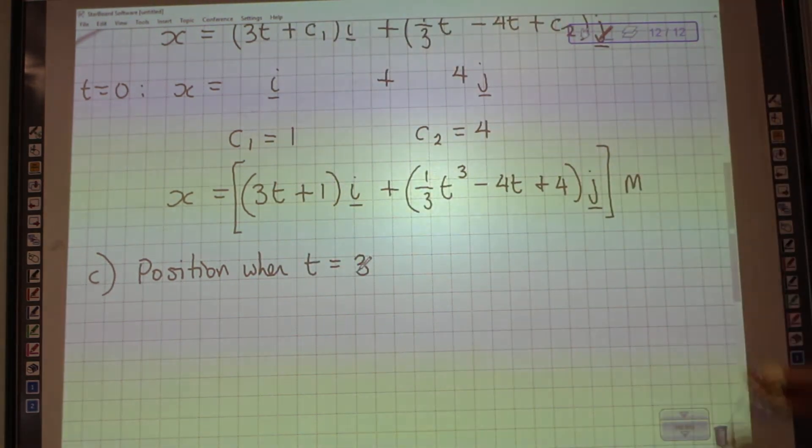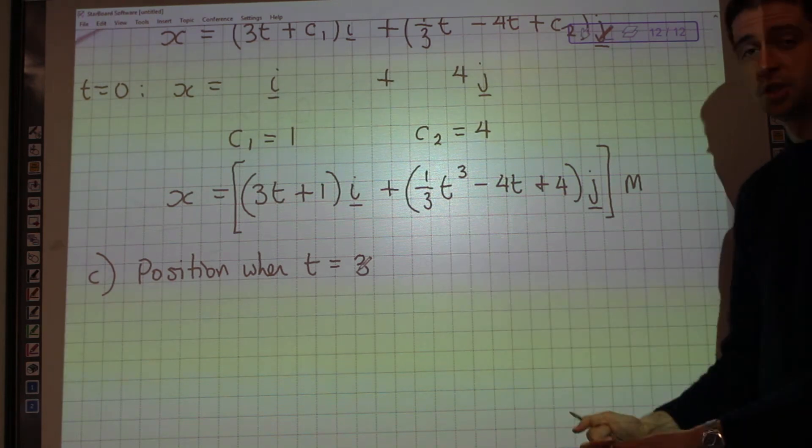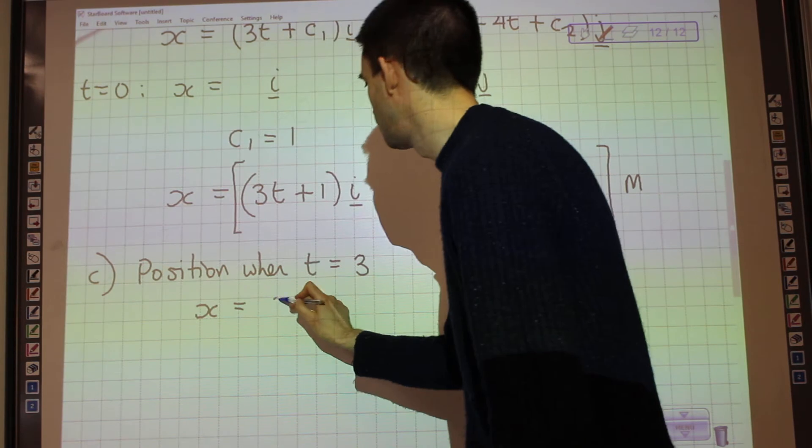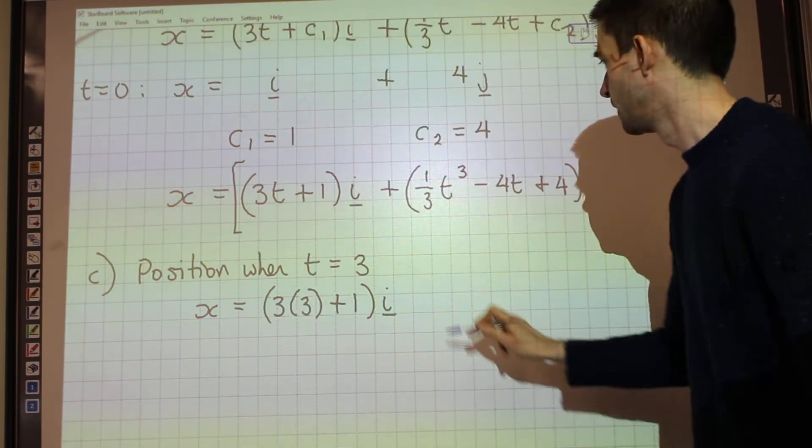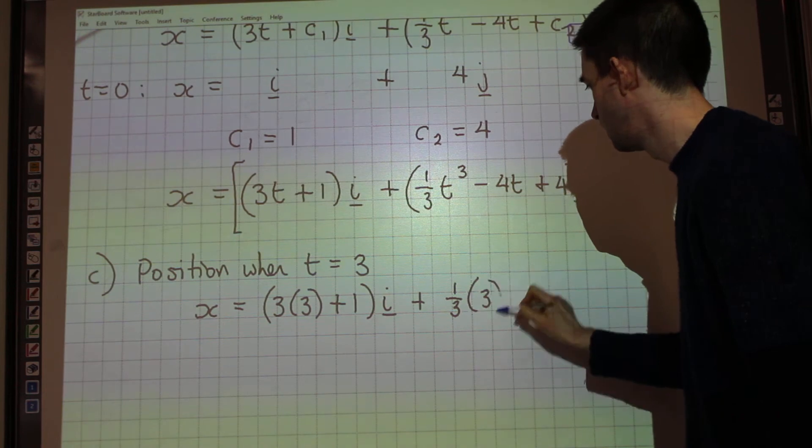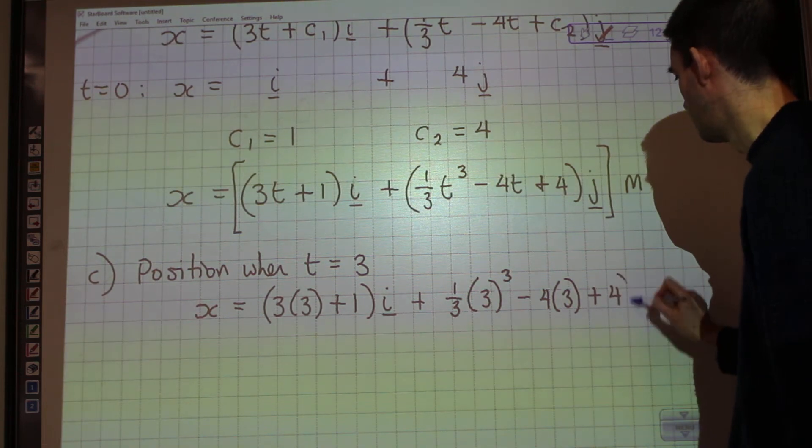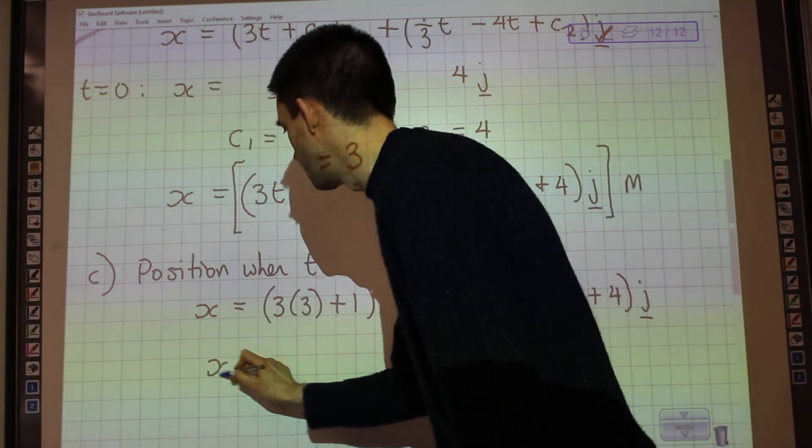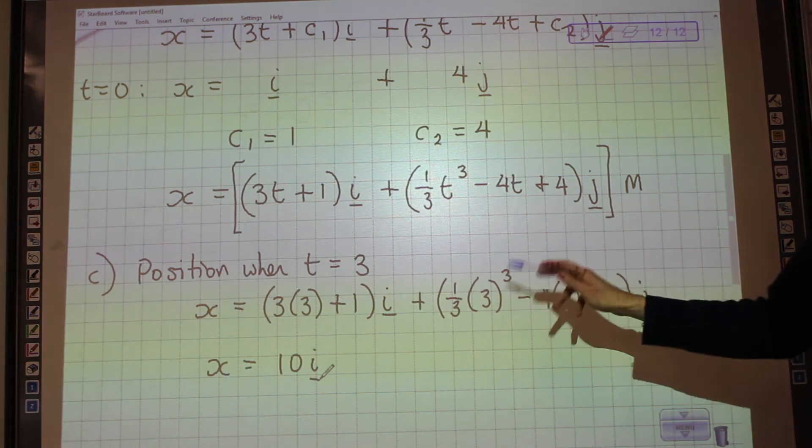And the way we do that is we substitute t equals 3 into our position equation. So, x equals 3 lots of 3 plus 1 for the i component and substituting 3 into the j component. 1 third 3 cubed minus 4 lots of 3 plus 4j. Which gives me the position after 3 seconds is 10i plus j.